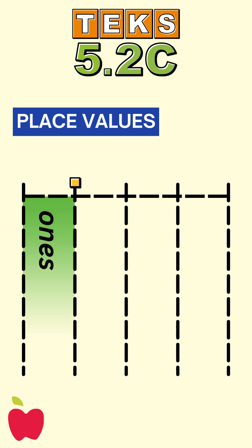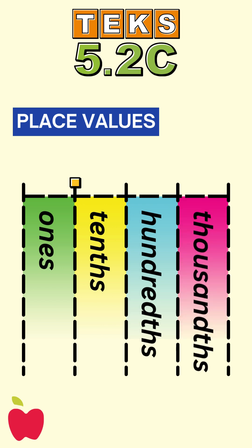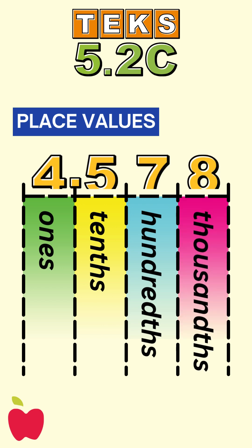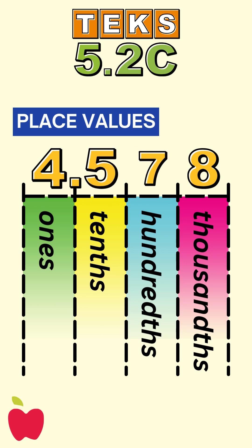Before we begin, let's quickly review place values. The number right after the decimal point is the tenths place. The next digit after that is the hundredths place, and the digit after that is the thousandths place. For example, in the number four and five hundred seventy-eight thousandths, five is in the tenths place, seven is in the hundredths place, and eight is in the thousandths place.